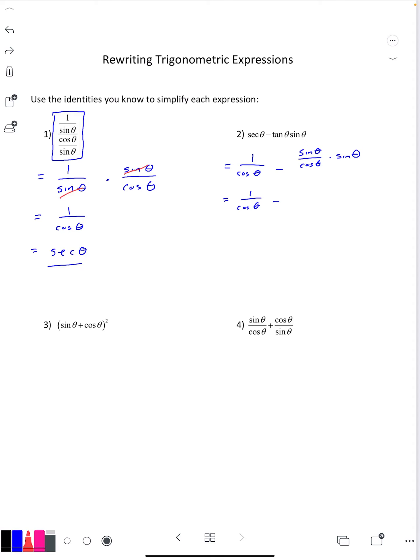Sine theta by itself is sine theta over one. Multiply the numerators, we get sine squared theta over cosine theta. Now these happen to have common denominators so I can combine the two fractions, subtracting the top.